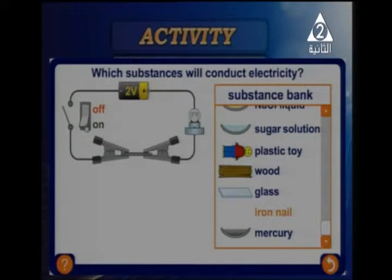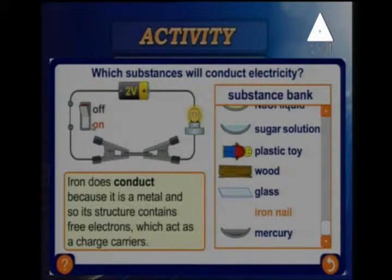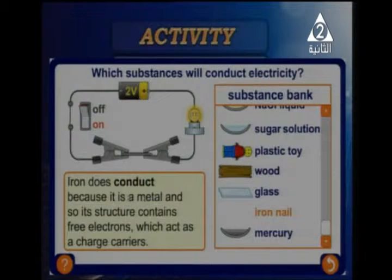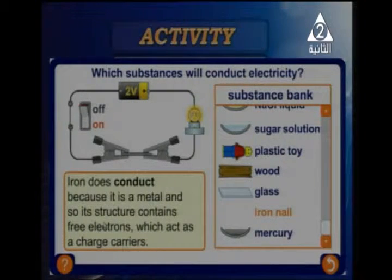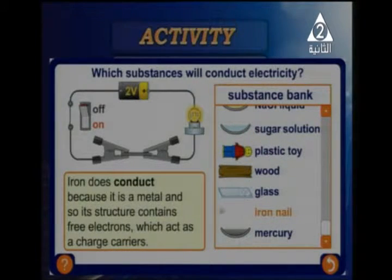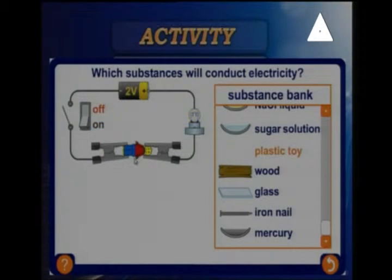Now if I replace wood with an iron nail, the light appears. Iron is a conductor because it is a metal and its structure contains free electrons, which act as charge carriers to conduct electric energy.